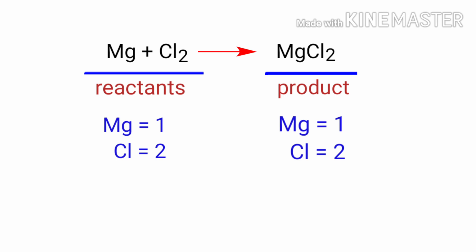There are one Magnesium atom and two Chlorine atoms on both sides. So we don't need to balance this equation because this equation is already balanced.